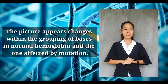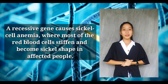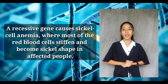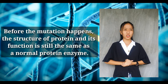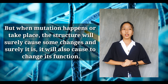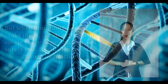The picture shows changes within the grouping of bases in normal hemoglobin and the one affected by mutation. A recessive gene causes sickle cell anemia, where most of the red blood cells stiffen and become sickle-shaped in affected people. Before the mutation happens, the structure and function of the protein remains the same as a normal protein enzyme. But when mutation takes place, the structure will cause changes and it will also alter its function.